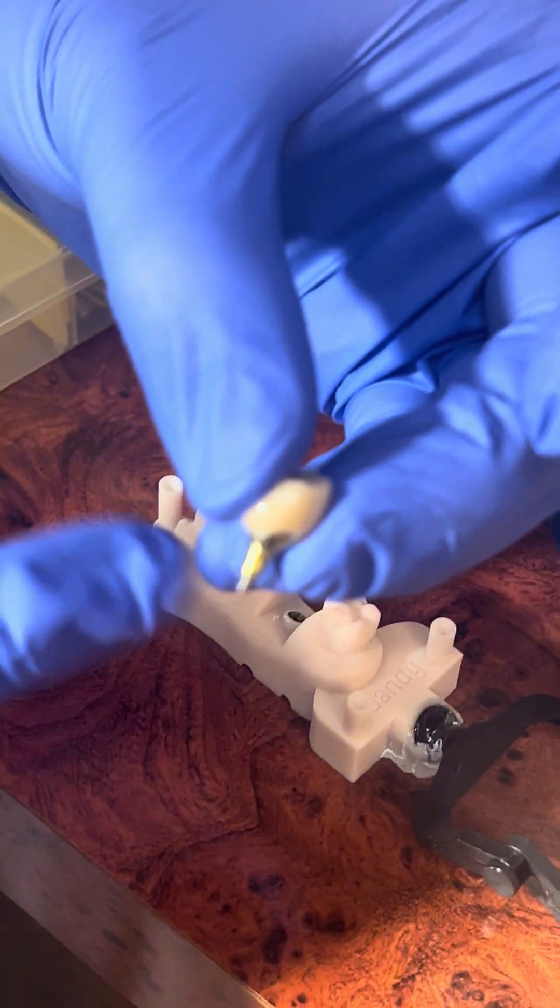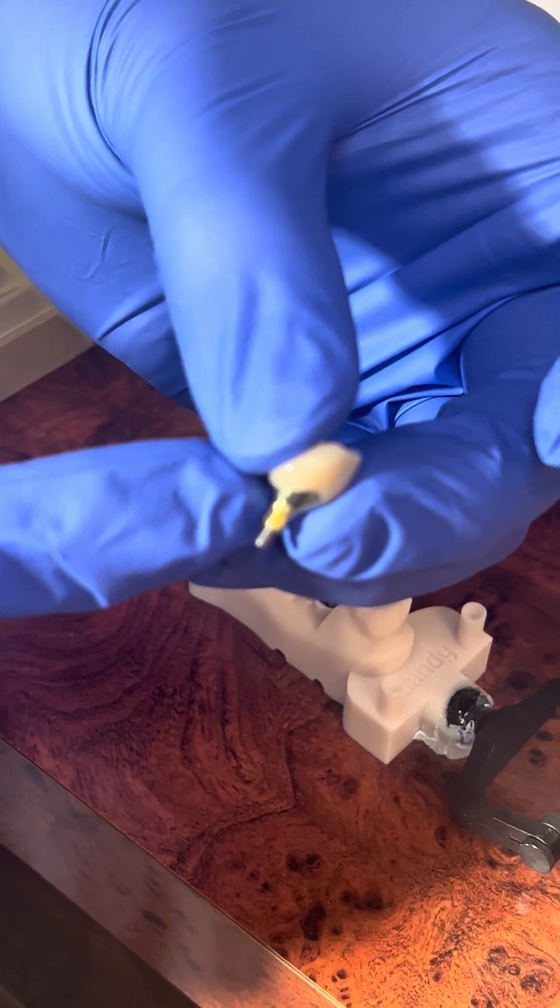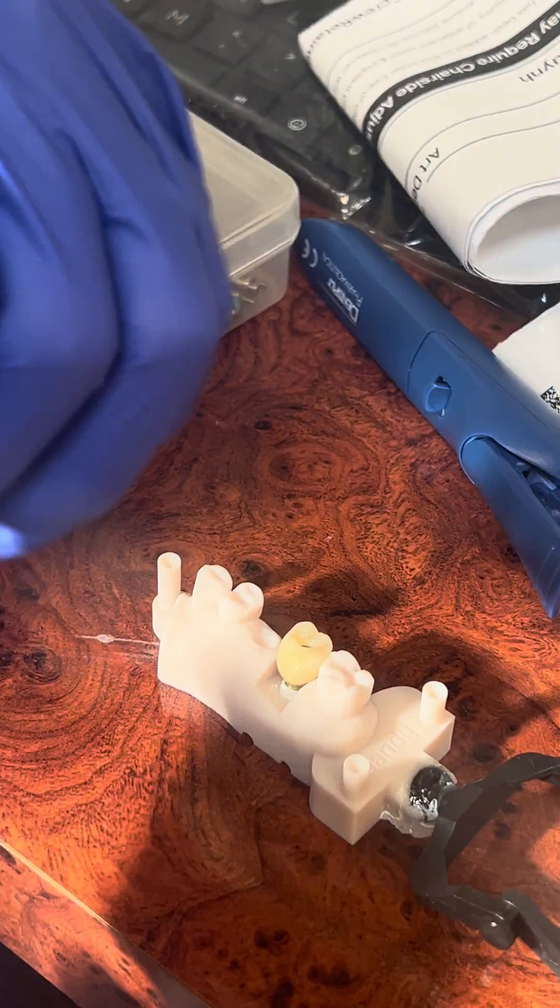It comes right out. You can see the screw, the gold abutment, and the crown. That's what's called a screw-retained implant. We're going to place this inside the patient's mouth.